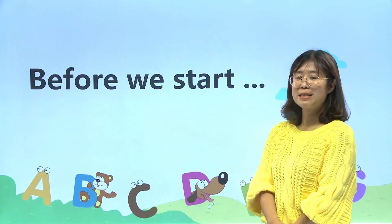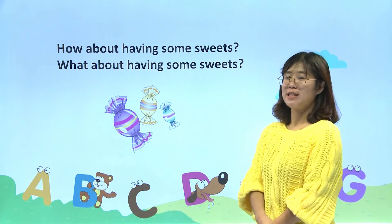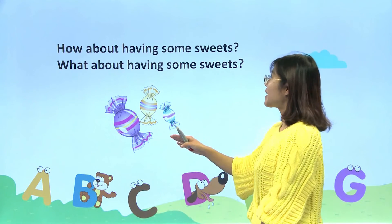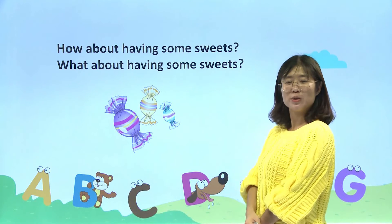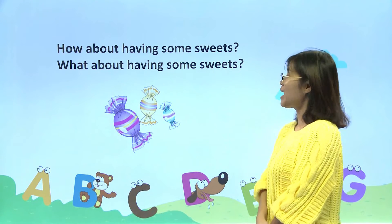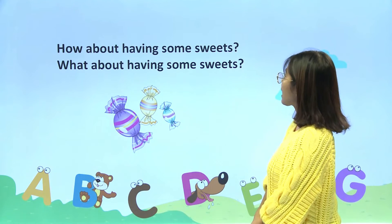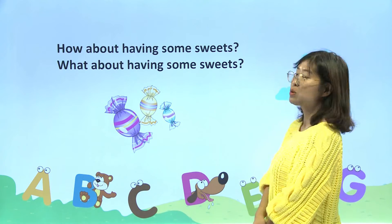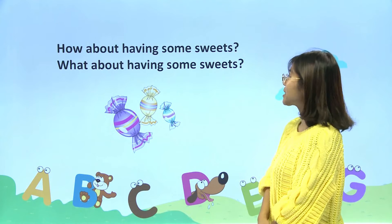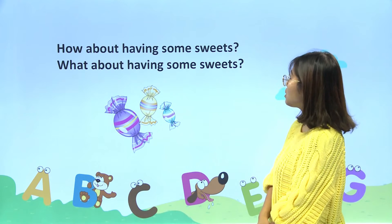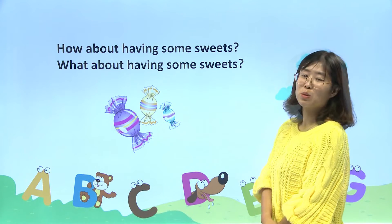好，before we start，在我们开始之前，我们看一下这两个句子说的是什么呢？How about having some sweets? Next up, what about having some sweets?